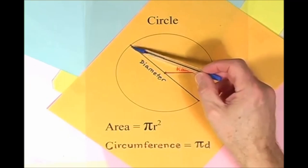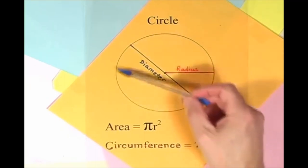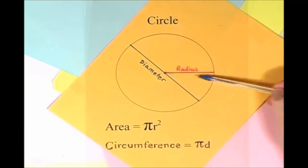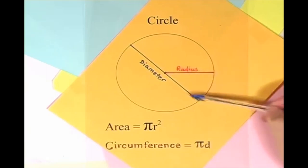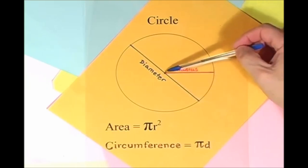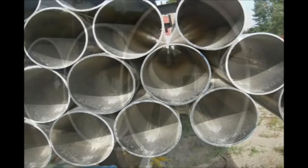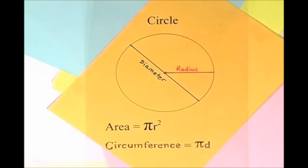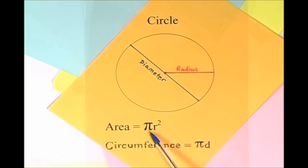Here is a circle, it knows how to get around. It has a radius from center to rim. And its diameter's a line that goes from side to side while passing through the center, now isn't that simple. Pi r squared sounds like area to me, when I need a circumference, I'll just use pi d.